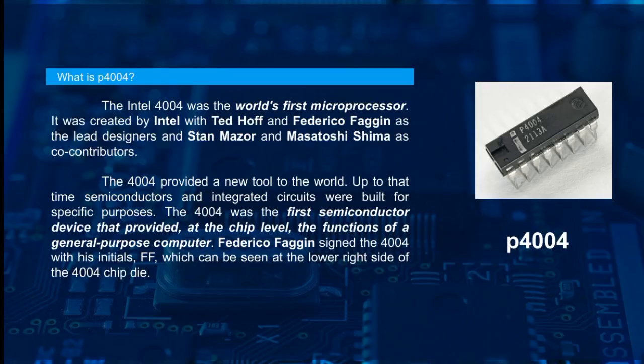The Intel 4004 is the world's first microprocessor. It was created by Intel with Ted Hoff and Federico Faggin as lead designers and Stan Mazor and Masatoshi Shima as co-contributors. The 4004 provided a new tool to the world — up to that time, semiconductors and integrated circuits were built for specific purposes. The 4004 was the first semiconductor device that provided, at the chip level, the functions of a general-purpose computer. Federico Faggin signed the 4004 with his initials FF, which can be seen at the lower right side of the chip.